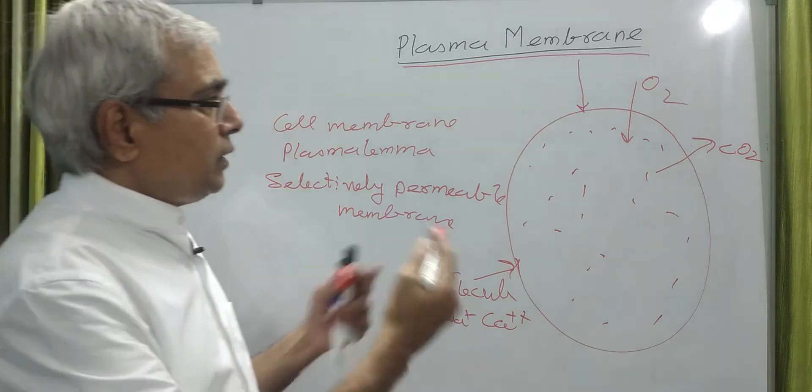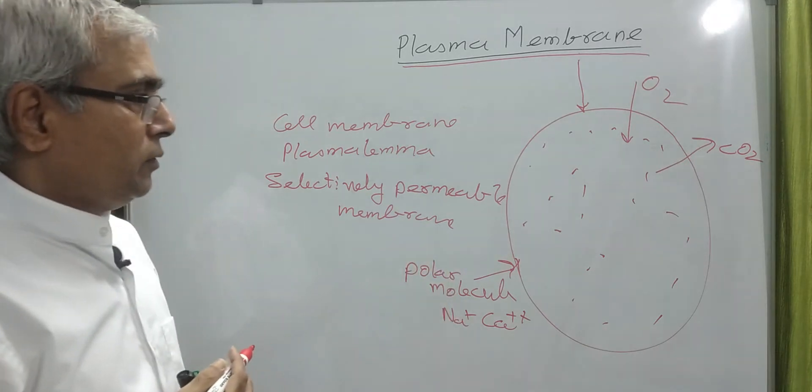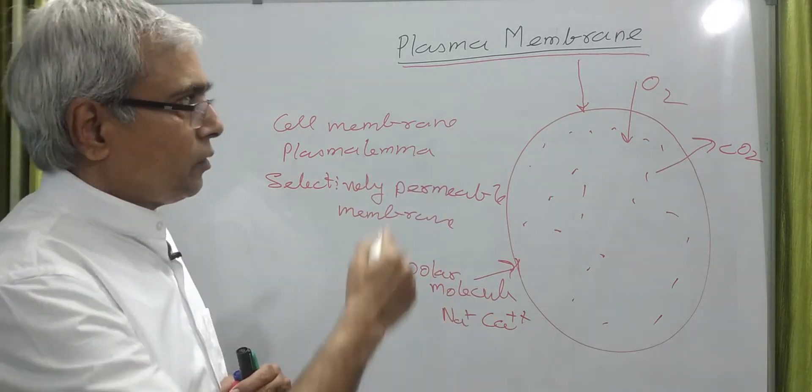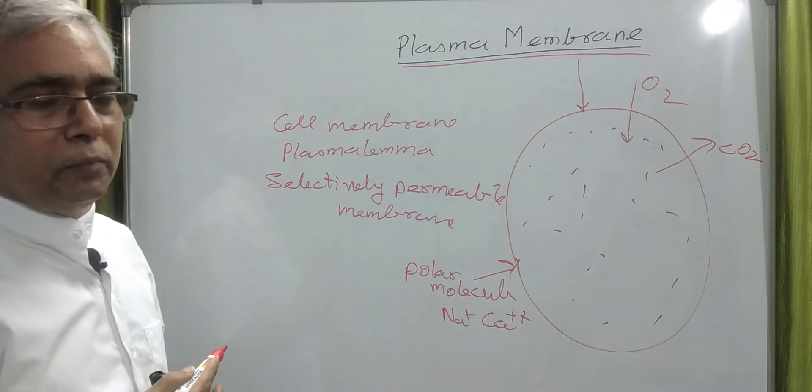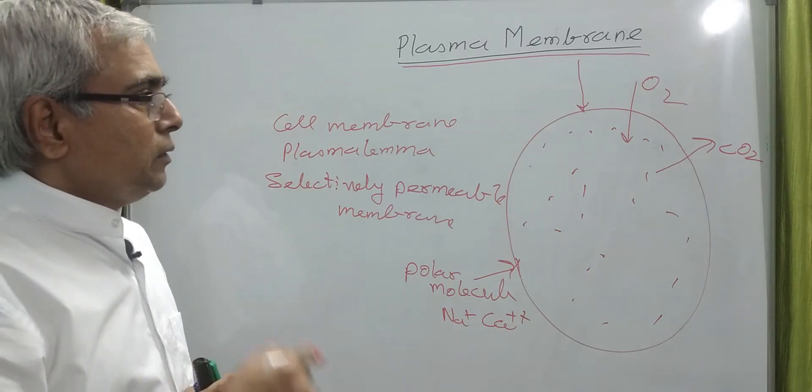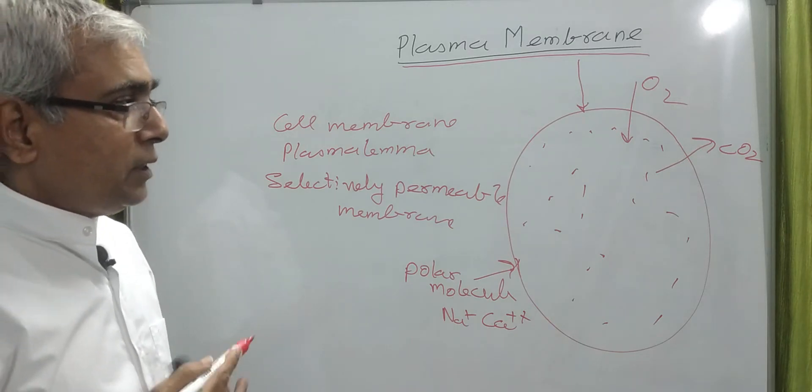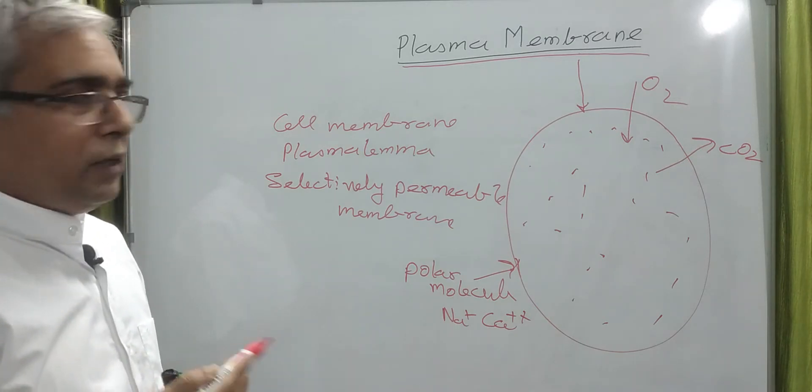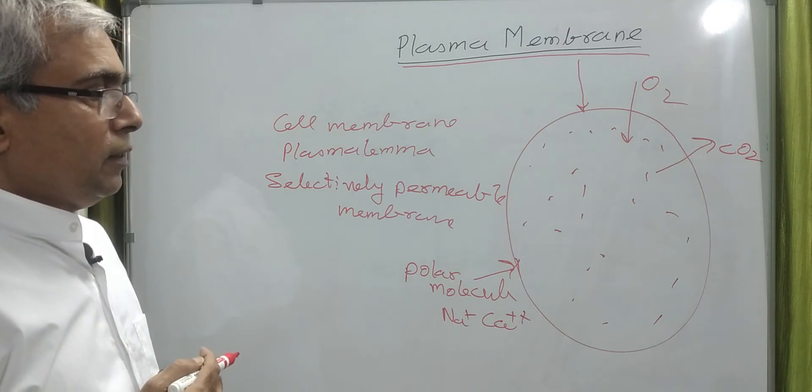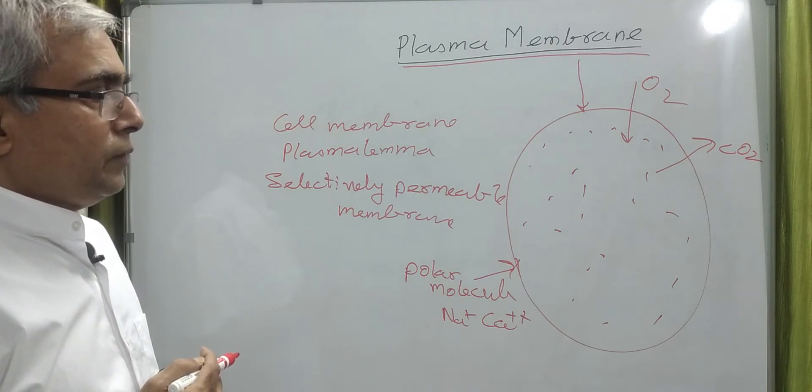I also like to tell you that in case of prokaryotic cells this plasma membrane or cell membrane defines the outer boundary of the cell, but in case of eukaryotic cells, even inside the cell it is present.